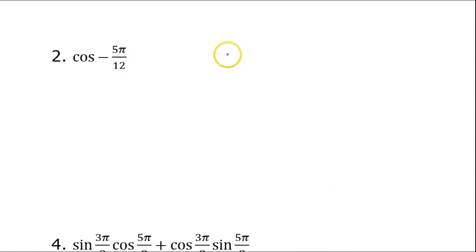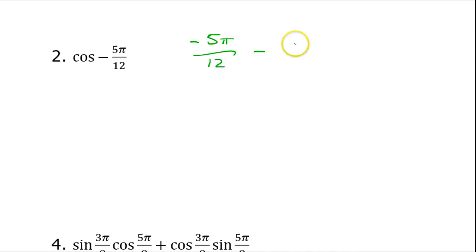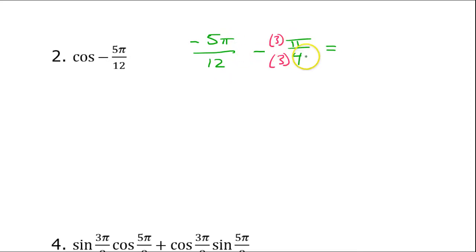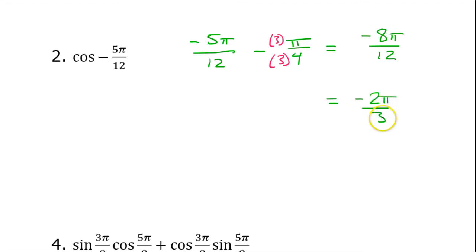Let's do the same thing for number 2. Again the first thing I need to do is figure out how to split this angle apart. I've got negative 5π over 12, and like before I'm going to subtract π over 4 and see if that helps me. For like denominators I multiply by 3, giving me negative 5π over 12 minus 3π over 12, which is negative 8π over 12. This reduces down to negative 2π over 3, which is a special angle.